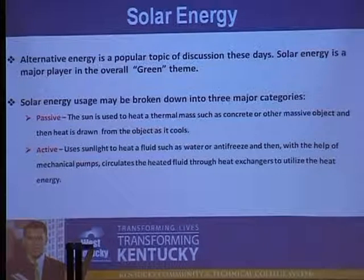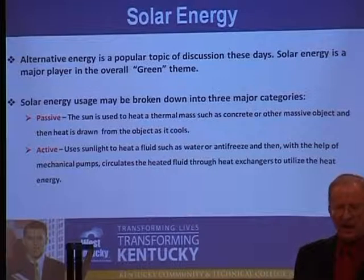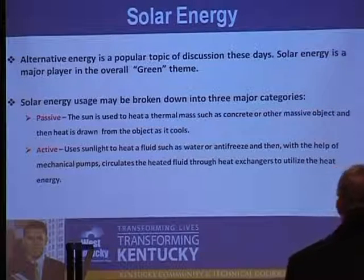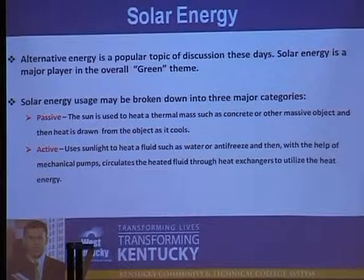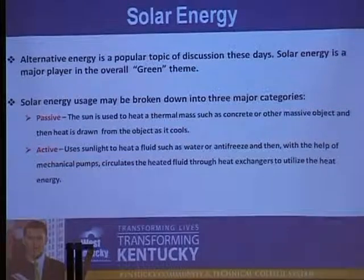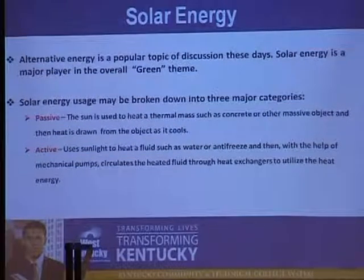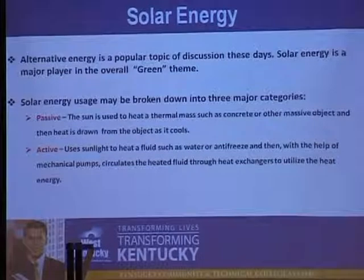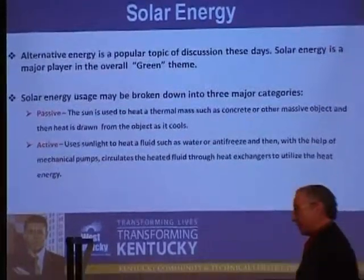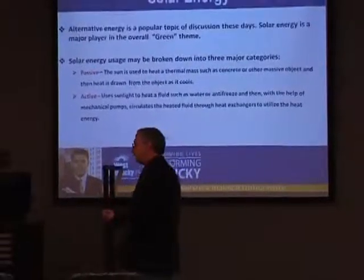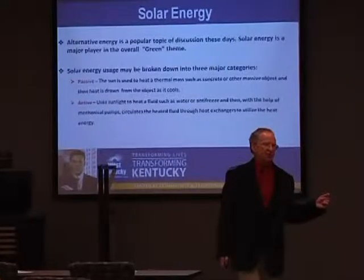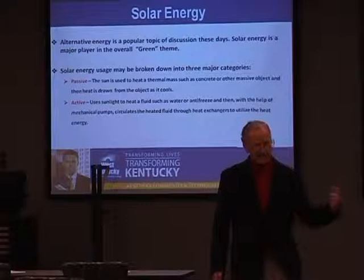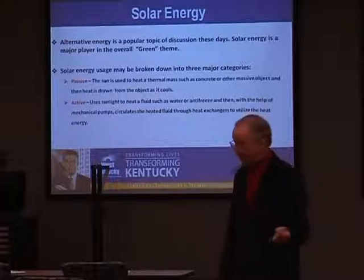Another type is active. Active solar energy involves the sun heating a fluid — water, or if it's cold enough, antifreeze, or some other form of liquid, even air. Water and antifreeze are typically the ones you hear about most. These require mechanical pumps to pump the heated fluid through a heat exchanger, and then heat is extracted via the heat exchanger and fans.